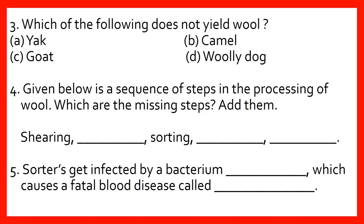Question No. 4: Given below is a sequence of steps in the processing of wool. Which are the missing steps? Add them. Shearing → ___ → Sorting → ___ → ___ → ___ → ___. In this question, the journey from shearing to the end has been asked, and we have to choose and fit the correct steps which are missed out.